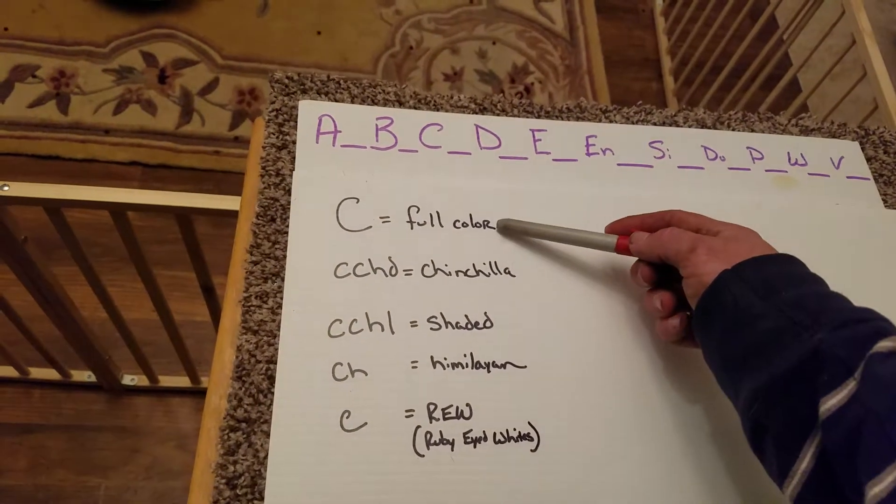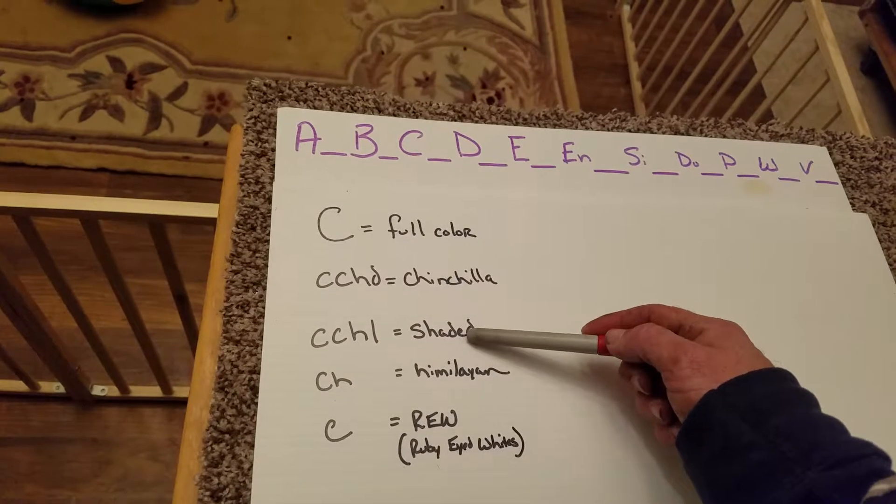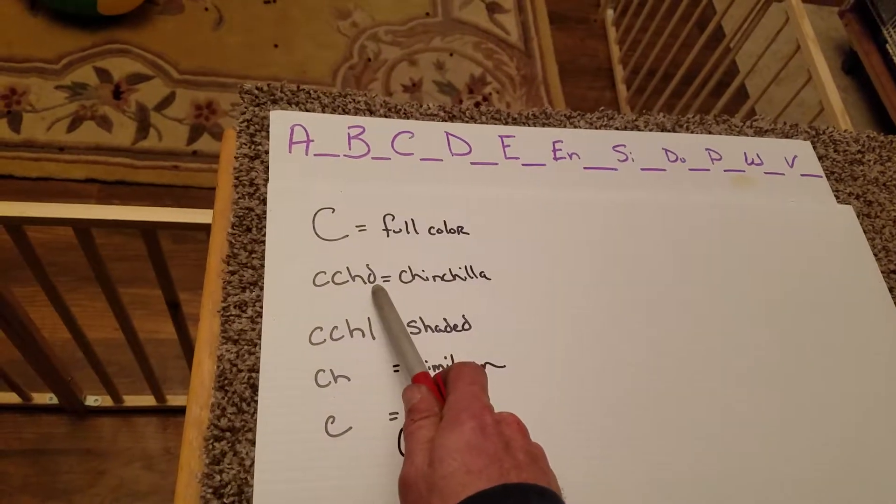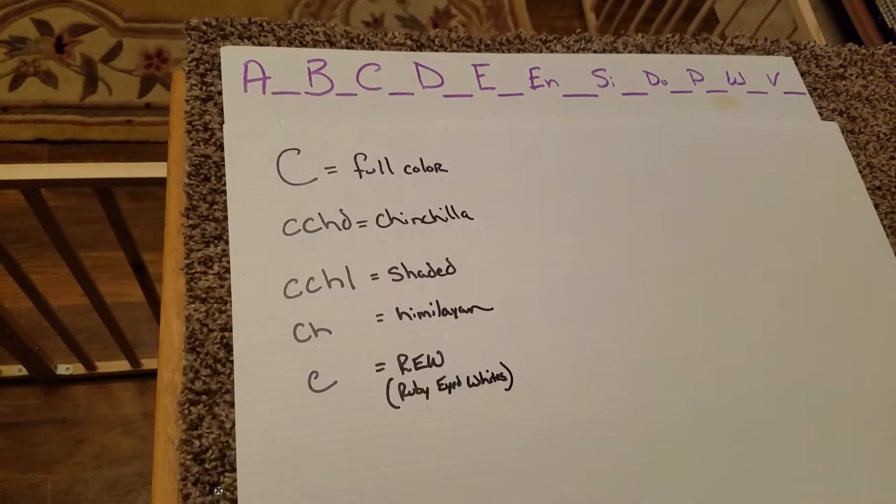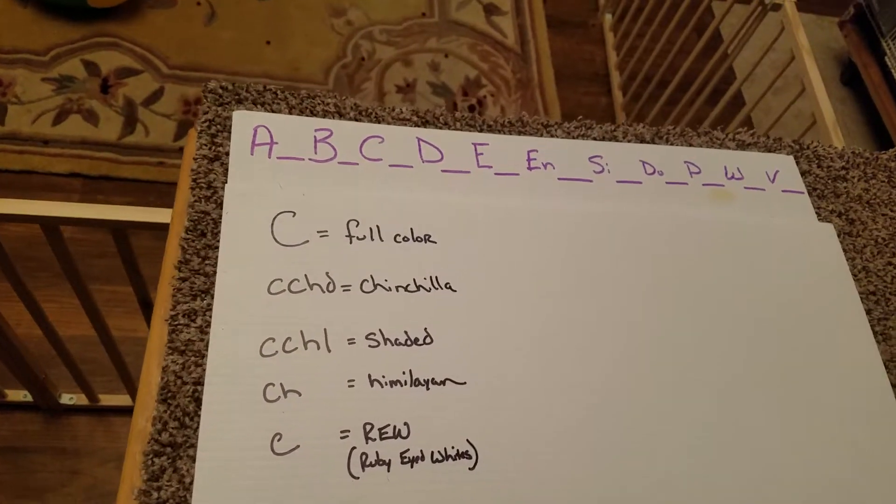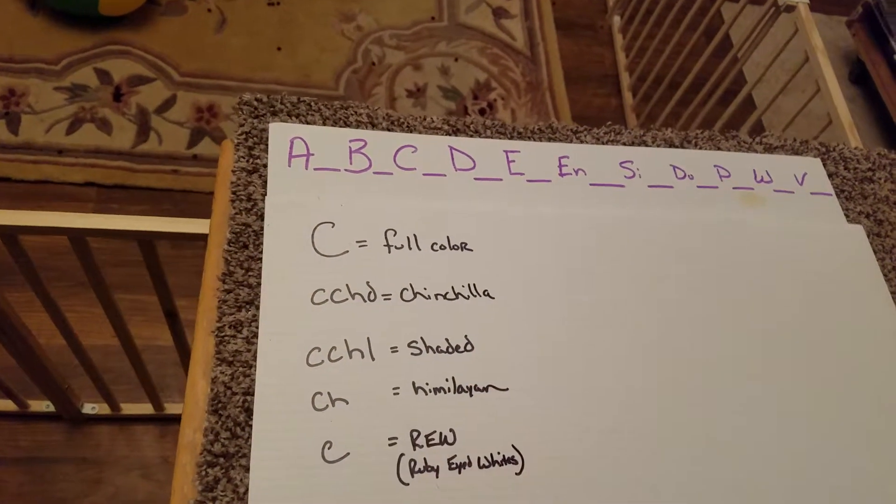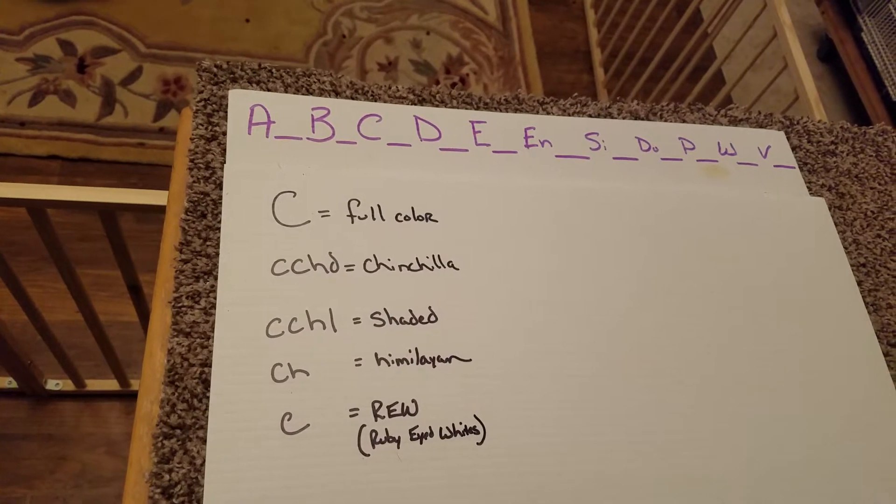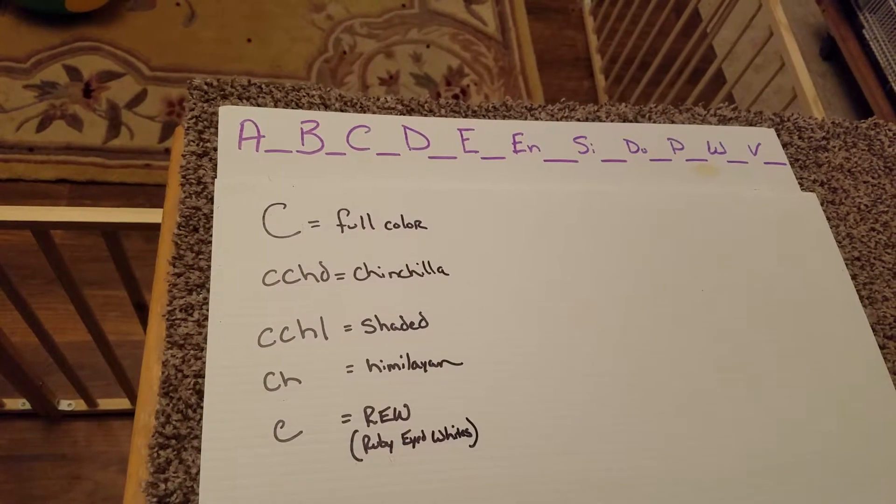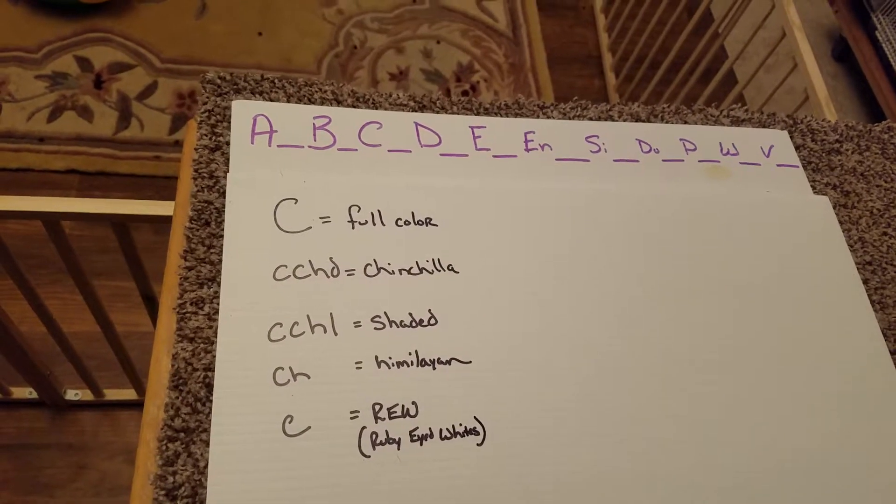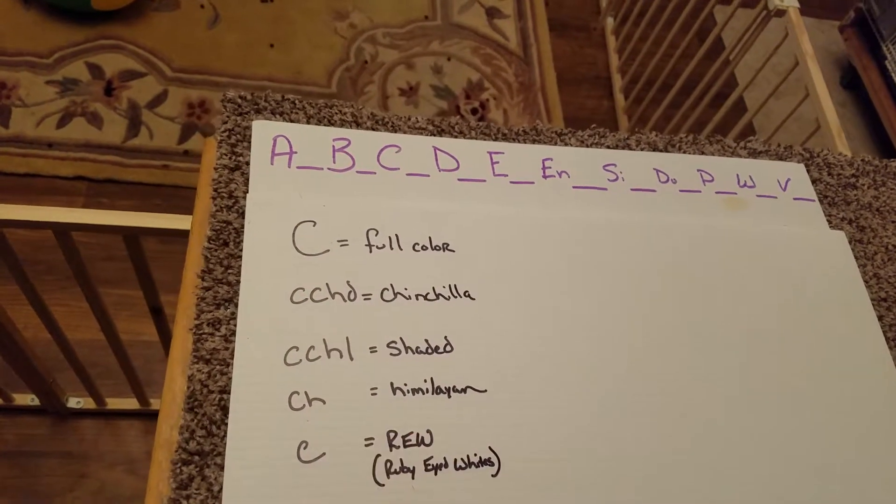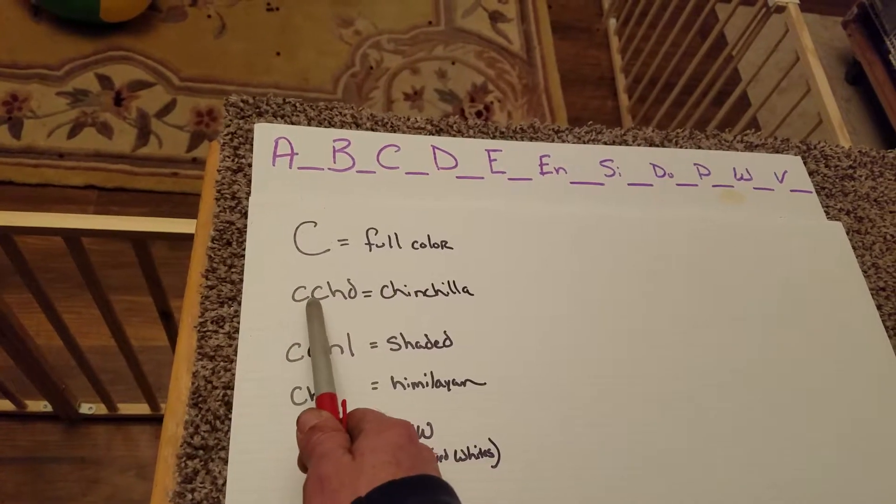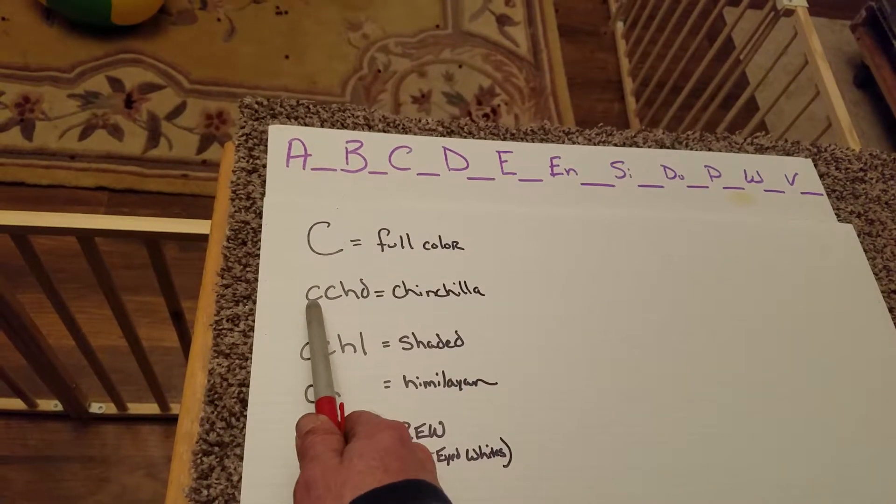The next one that is less dominant than full color but more dominant than the one below it is the one that we call CCHD, or also known as the chinchilla gene or allele. This allele is responsible for what you're going to see in chinchillas. What it actually does is it removes orange pigment from the hair shaft. So if your rabbit has any orange on it, this is not going to be the most dominant allele at the C locus.